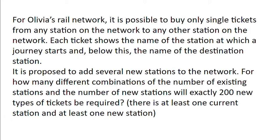For Olivia's rail network, it is possible to buy only single tickets from any station on the network to any other station on the network. Each ticket shows the name of the station at which a journey starts and below this the name of the destination station. It is proposed to add several new stations to the network. For how many different combinations of the number of existing stations and the number of new stations will exactly 200 new types of tickets be required?